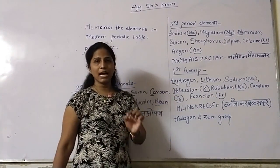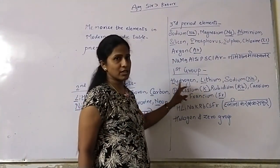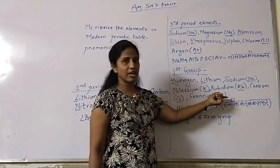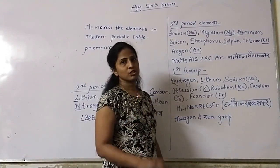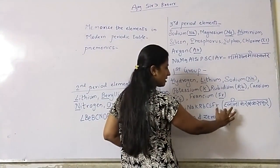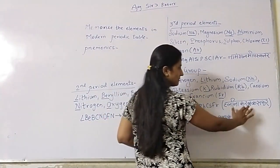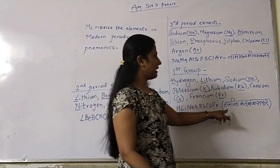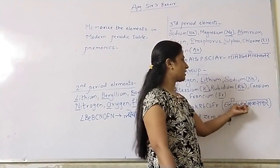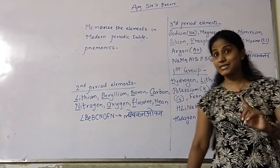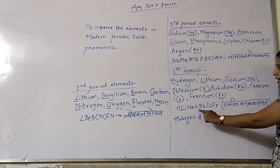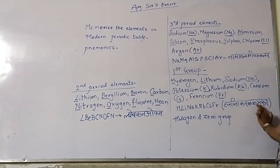Now let us look at the first group — the Alkali Metals. The elements are: Hydrogen (H), Lithium (Li), Sodium (Na), Potassium (K), Rubidium (Rb), Cesium (Cs), Francium (Fr). Taking the initials we get the mnemonic: 'Halina Karab Kaspar.' I have written all the initials — now let us form the word: Her, Li, Na, Kar, Rb, Cs, Fr → 'Halina Karab Kaspar.'